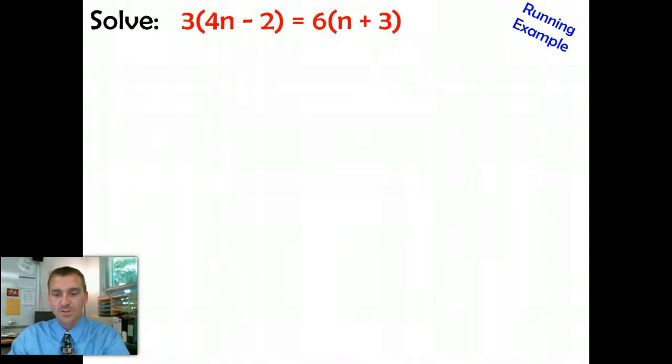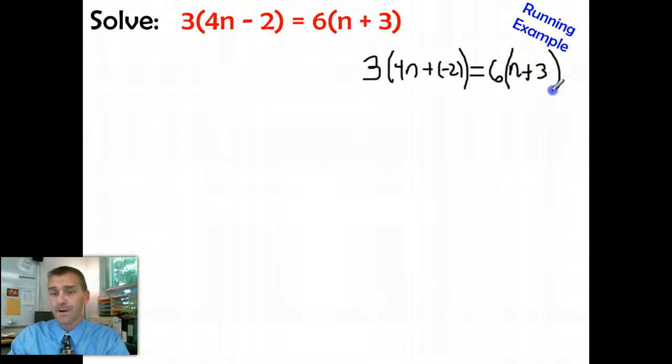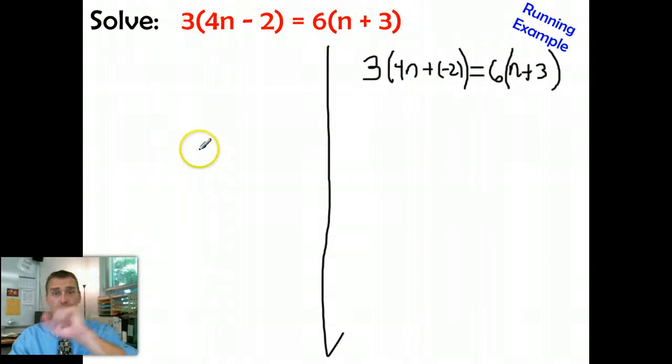With this running example, I'll show you both ways as we do it. But changing the subtraction signs, if you remember from Algebra 1, you can take this subtraction sign and change it to adding the opposite. So it's like 3, and then in parentheses, 4n, and then addition of a negative 2. So you're just changing the subtraction sign here to adding the opposite. And that still equals 6, and then in parentheses, n plus 3. So if you want to do that, by all means do it. But I'll tell you what, if you keep getting these questions wrong, I'm going to tell you to start doing it. So that's step number 1.